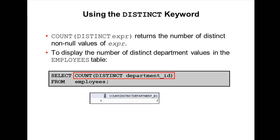And we use DISTINCT in the COUNT function, then it returns the number of non-null values, unique and non-null values in the column identified by expression. To display the distinct number of distinct department values in the employees table, use this example given in the slide: SELECT COUNT DISTINCT department ID FROM employees. This gives the distinct department values in the employees table.